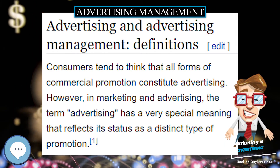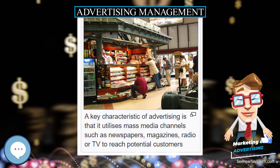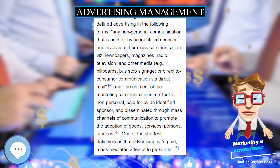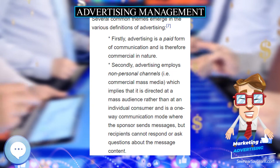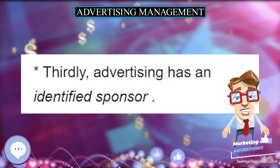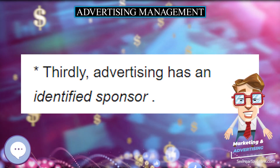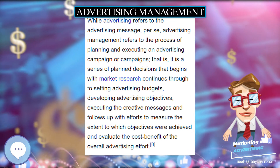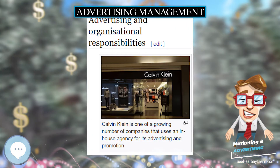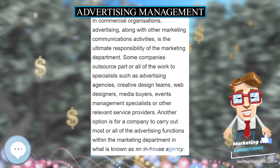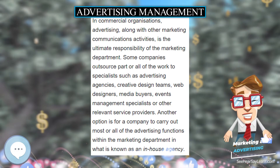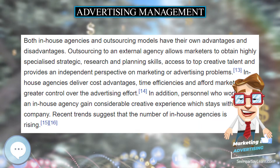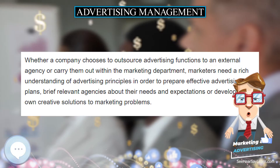Several common themes emerge in the various definitions of advertising. Given that advertising is paid, it is one of the many controllable elements in the marketing program. Advertising is qualitatively different from publicity, where the message sponsor is either not identified or ambiguously defined, and different from personal selling, which involves face-to-face contact allowing for two-way dialogue. Advertising management refers to the process of planning and executing advertising campaigns — a series of planned decisions that begins with market research, continues through setting advertising budgets and developing advertising objectives, and follows up with efforts to measure whether objectives were achieved.